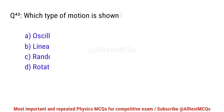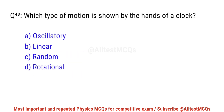Question No. 43. Which type of motion is shown by the hands of a clock? Right option is D. Rotational.